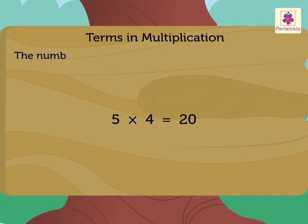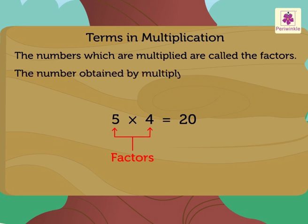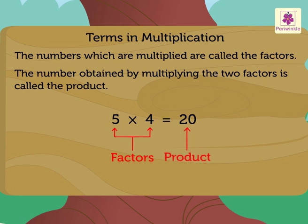Here, the numbers which are multiplied are called the factors. So, in this example, the numbers 5 and 4 are the factors. The number obtained by multiplying the two factors is called the product and number 20 is the product here.